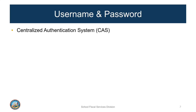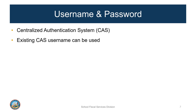Individual access begins with the username and password. The PADC web application does not assign usernames and passwords. Instead, users create a username and set up a password in the centralized authentication system referred to as CAS. The CAS username and password serves as the authentication system for the PADC and other CDE applications. Existing CAS usernames can be used to set up PADC access. If a user had any recent changes in employment, they should verify that their district or charter assignment in CAS is current, and most importantly, that the email address is current. A link to the CAS system to update or create a new account can be found on the PADC webpage.